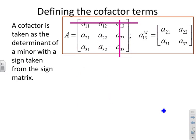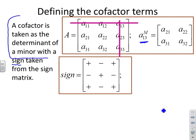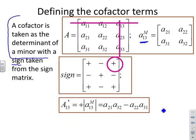Now we can define cofactors. A cofactor is taken as the determinant of a minor with the additional factor that we take the sign from the sign matrix. For the 1,3 cofactor: the minor A13^M is [A21, A22; A31, A32], which we already computed. The sign at position 1,3 is plus, so the cofactor A13 equals plus times the determinant of that minor — the product of the diagonals minus the product of the off-diagonals.